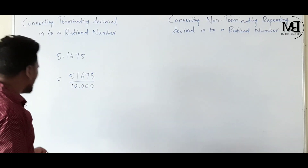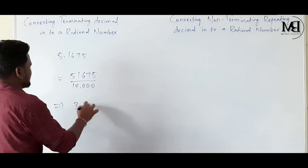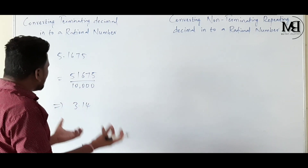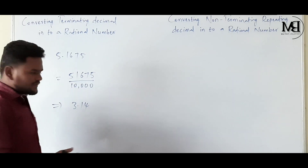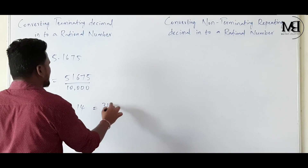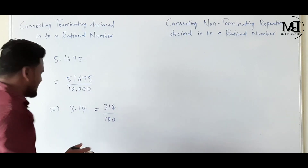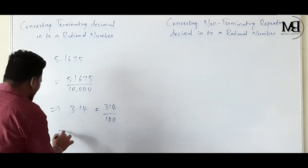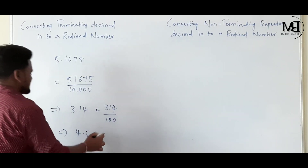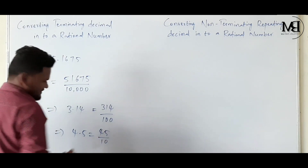For more examples: 3.14 — what is the P by Q form? It is equal to 314 by 100. It is very easy. And if I take one more example, 4.5, this can be written as 45 by 10.